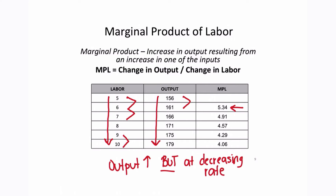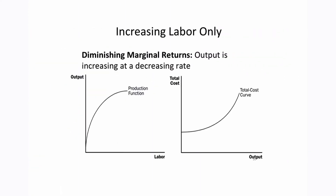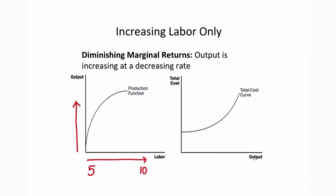This is what we call diminishing marginal returns. As labor increases from 5 workers to 10 workers, our output is increasing but at a slower and slower rate. If we increase only one factor of production — only labor — we can expect output to rise, but it rises at a slower and slower rate. At the same time, because we have more workers our variable costs are rising, so total cost rises as we produce more.